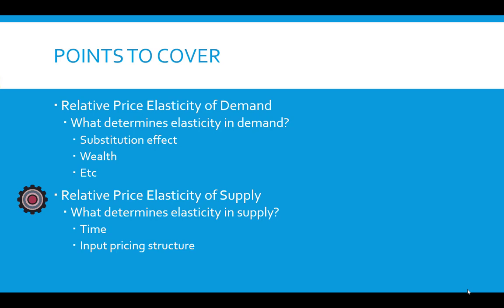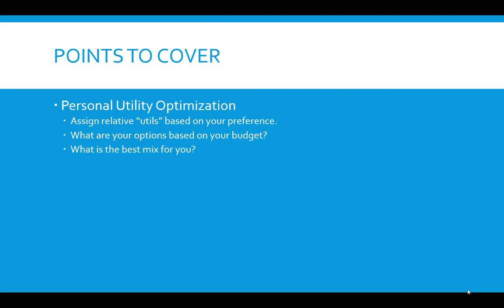Depending on your specific market, talk about how time would affect supply. There's also input pricing structure. If you're producing a larger quantity and buying inputs in larger batches, you could get lower pricing overall, making supply more elastic due to economies of scale — the more you make, the lower the average cost per product. If you're in an industry where average cost doesn't go down as you produce more, then supply may become more inelastic.